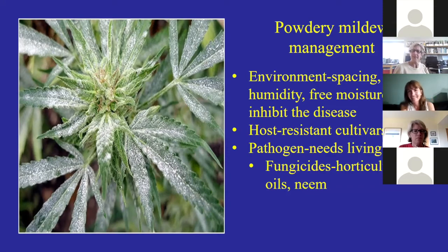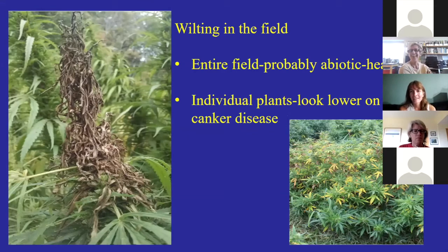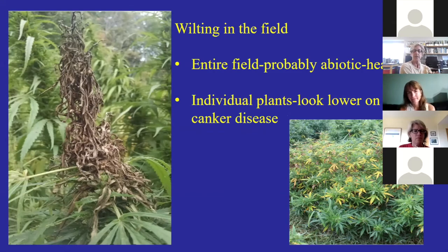If you go out in the field and see wilting in the entire field, think back to those abiotic things — that's probably abiotic. Look at your irrigation system, think about how hot or dry it's been. However, if you see individual plants wilting hit or miss, always look lower in the plant to figure out what's interrupting the flow of water and nutrients up to the top.